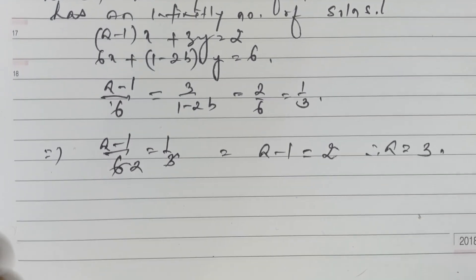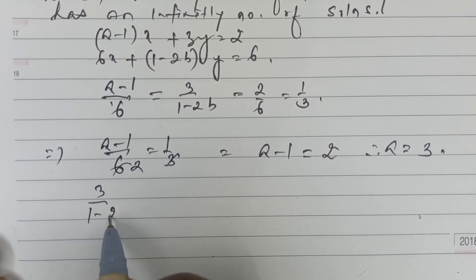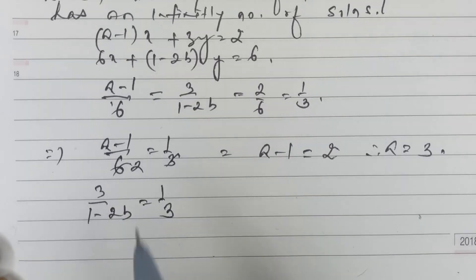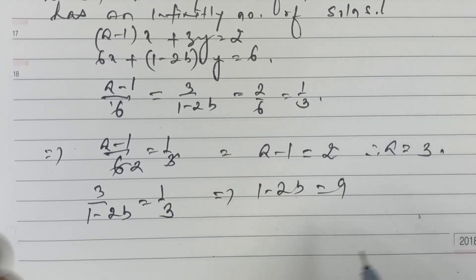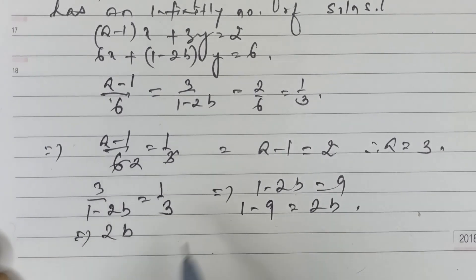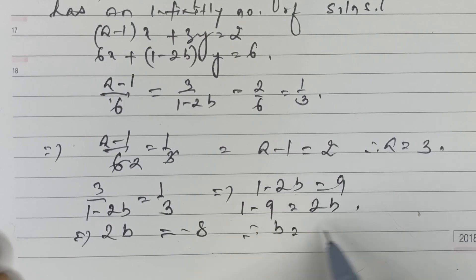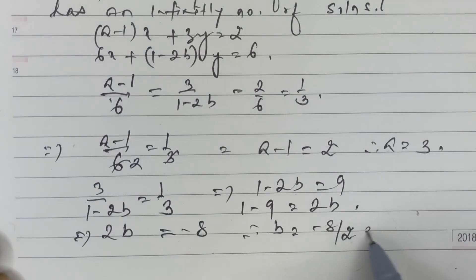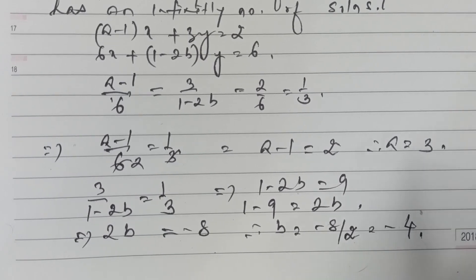And for b, we can compare second to third, that is 3/(1-2b) = 1/3. Now 1-2b = 9. 1-9 = 2b, then 2b = -8, therefore b = -8/2, that is -4. So a = 3 and b = -4.